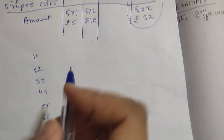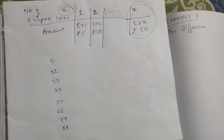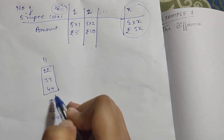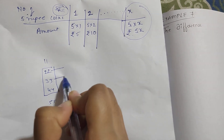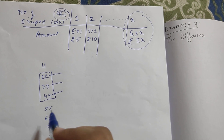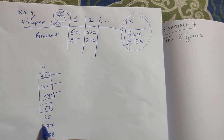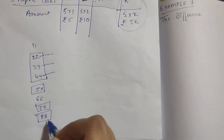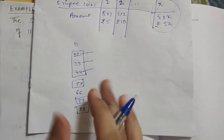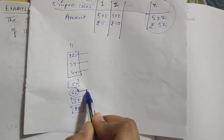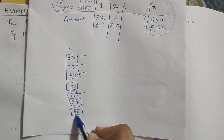When they say consecutive, they mean multiples that follow one after another continuously. For example, 22, 33, 44 are consecutive multiples. But 55, 77, and 88 are not consecutive because there is one multiple missing in between.